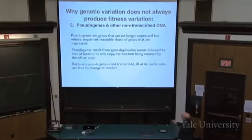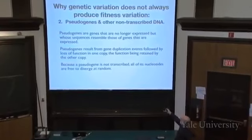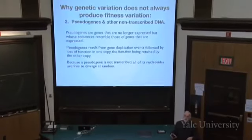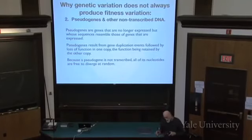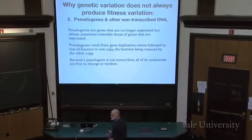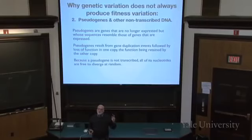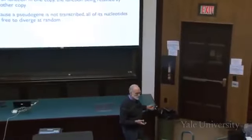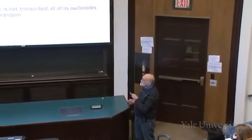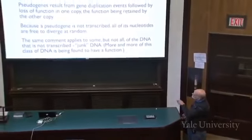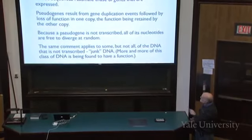Pseudogenes are not transcribed, and all their nucleotides are free to diverge at random — no editing process, natural selection isn't preferring one mutation over another. This gene has been turned off and will inevitably get eroded, because all DNA sequences are subject to mutation. If a mutation occurs in a pseudogene, there is no particular reason for repair mechanisms to pay special attention to it, and it's not repaired by natural selection either. This comment applies to a lot of DNA that's not transcribed.